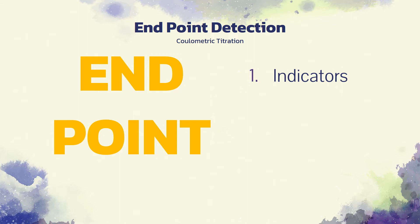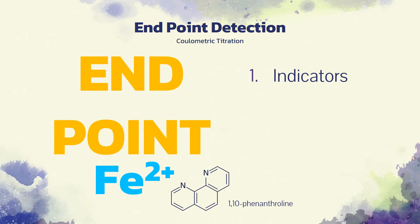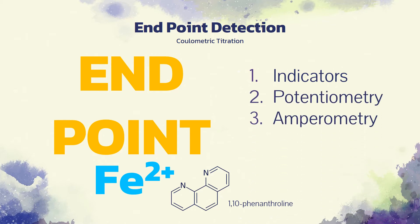Generally, the endpoint indicators described in volumetric methods are applicable to coulometric titrations as well. For example, in the titration of iron 2+, an oxidation-reduction indicator such as 1,10-phenanthroline can be used. As an alternative, the endpoint can be determined potentiometrically or amperimetrically. These are used in Karl Fischer titrators. Furthermore, some coulometric titrations utilize a photometric endpoint.